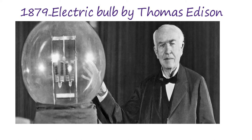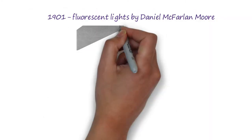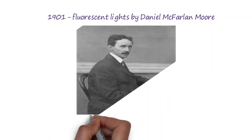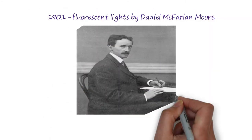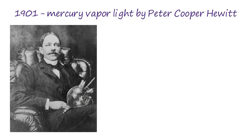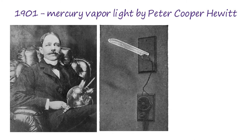Incandescent bulbs would go on to dominate the world of lighting until fluorescent lights were introduced commercially in 1904. Concurrently, an inventor named Peter Cooper Hewitt had developed the first mercury vapour light that was both high-efficiency and compatible with standard electric infrastructure.